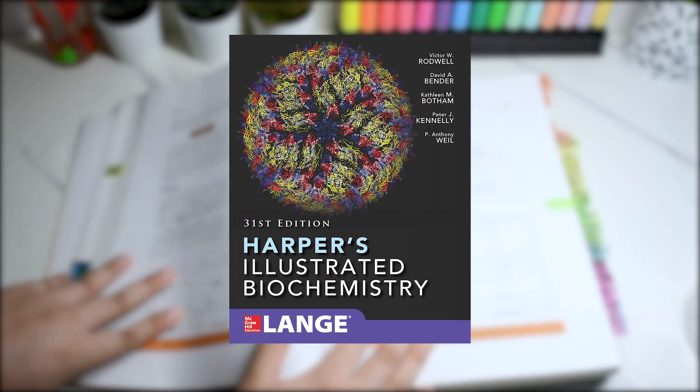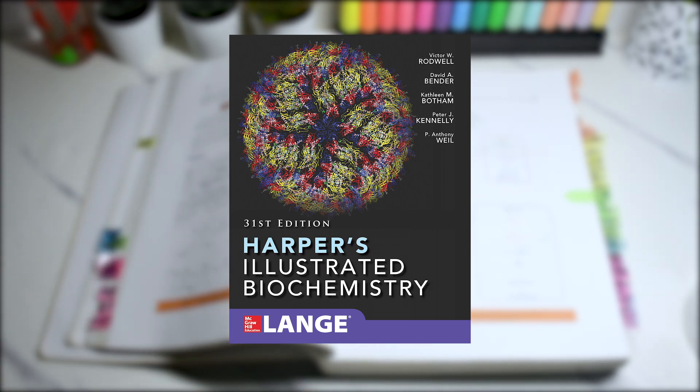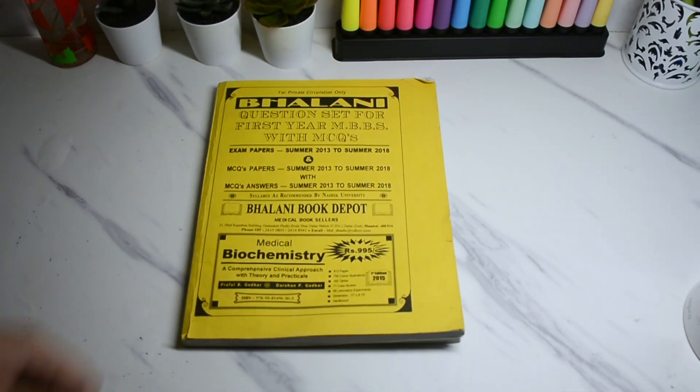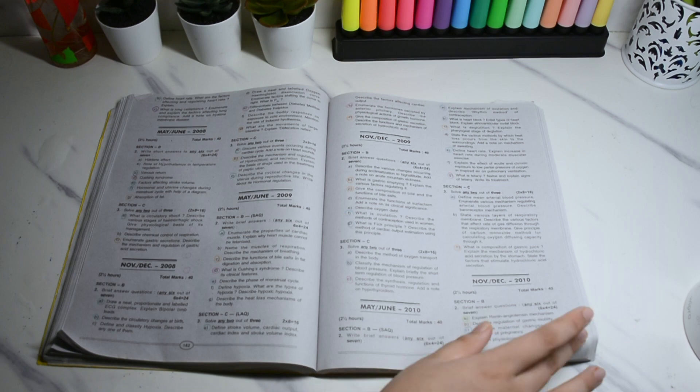The standard though is Harper's Illustrated Biochemistry. It's the gold standard book which is considered at the time of PG preparation. For past papers, MCQs, and important questions asked in the exams I use Balaji's question set. There is a similar book by a publication called Unique Publications.